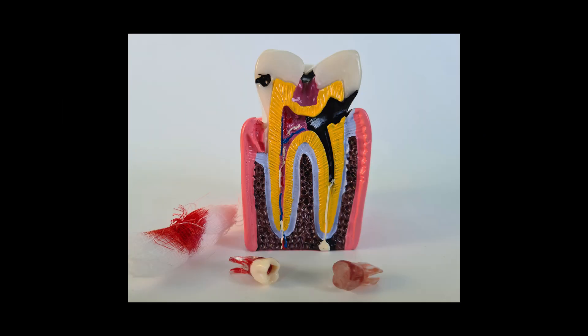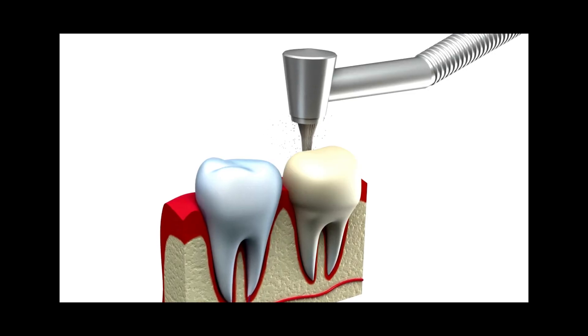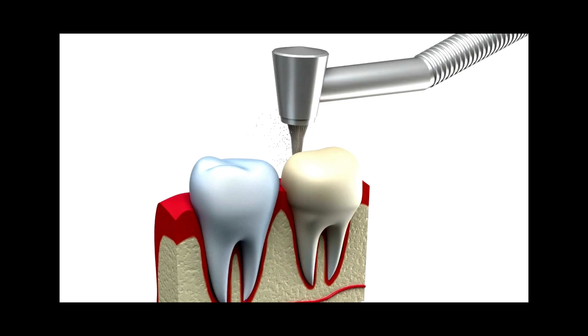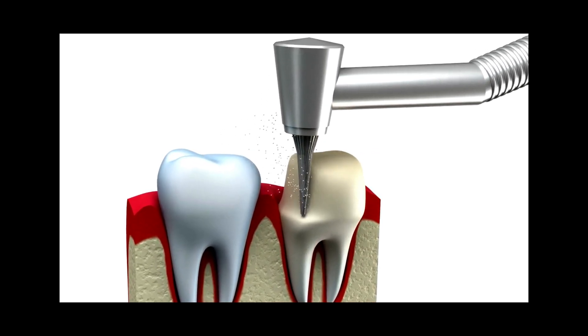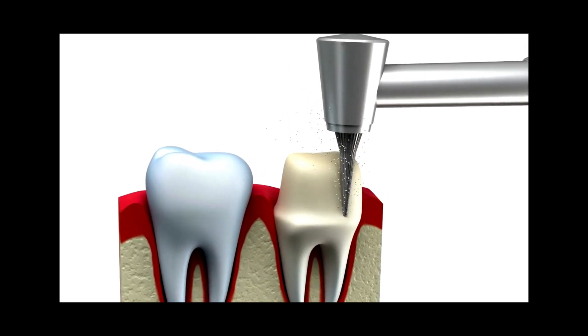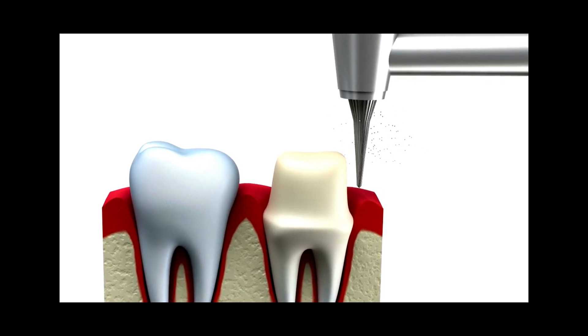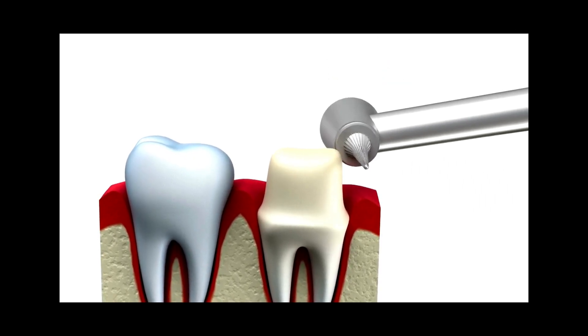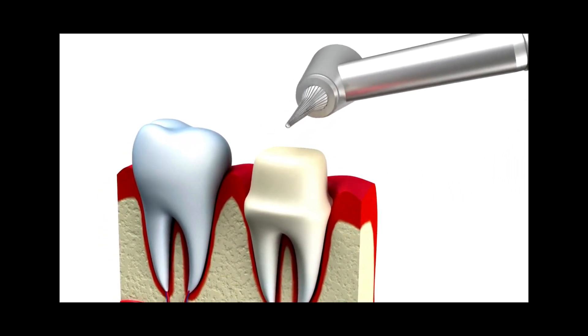Crowns are typically recommended when a tooth is severely weakened and cannot be restored with a simple filling. If a crown is deemed necessary, the next step is to prepare the tooth. The dentist will reshape the tooth by filing down its sides and top, ensuring that the crown will fit properly over the tooth.